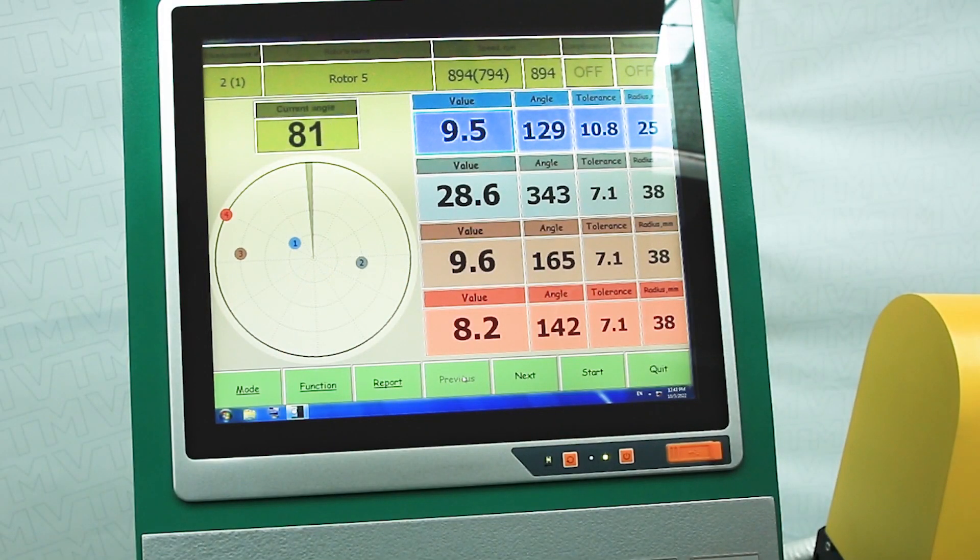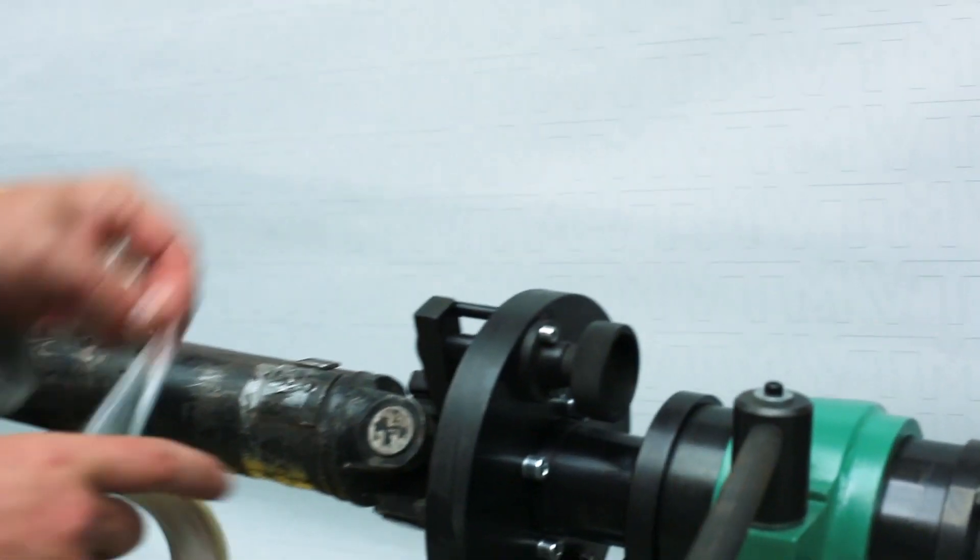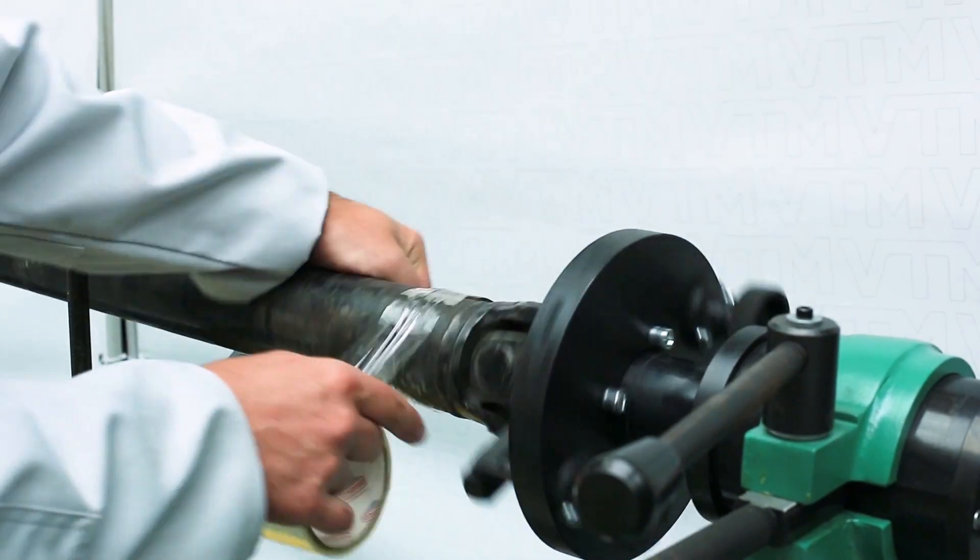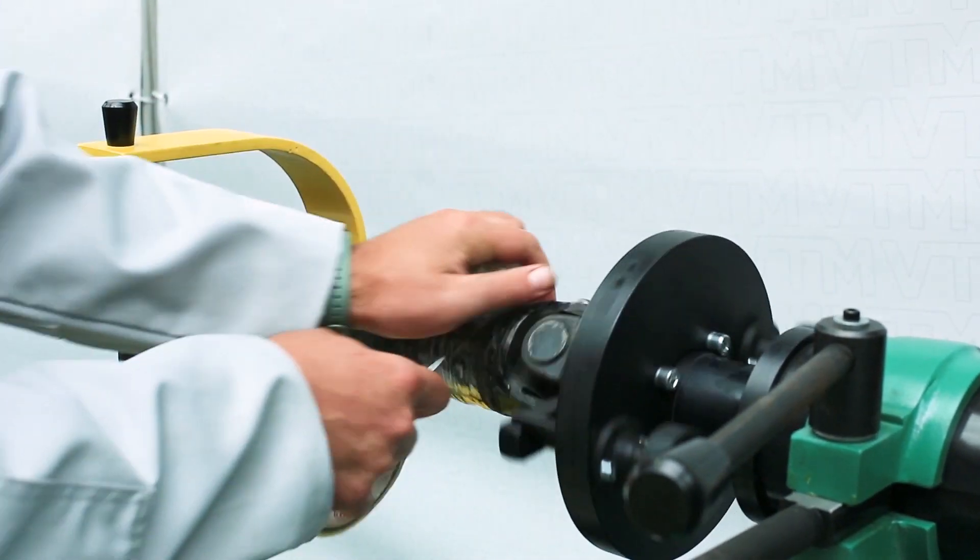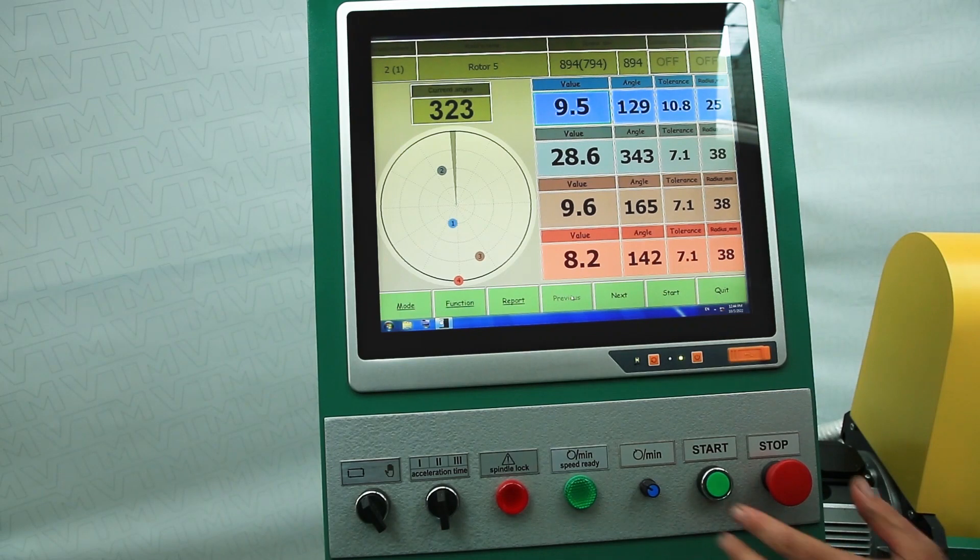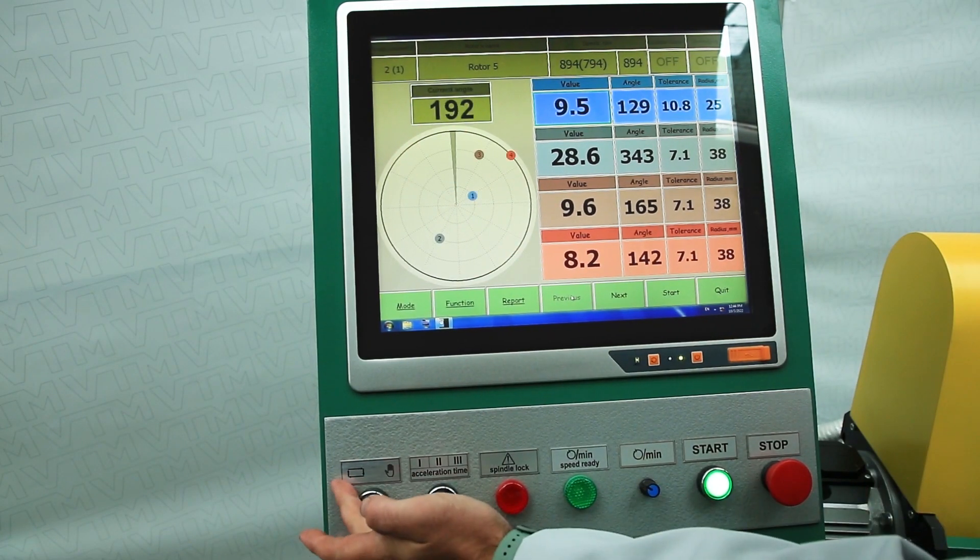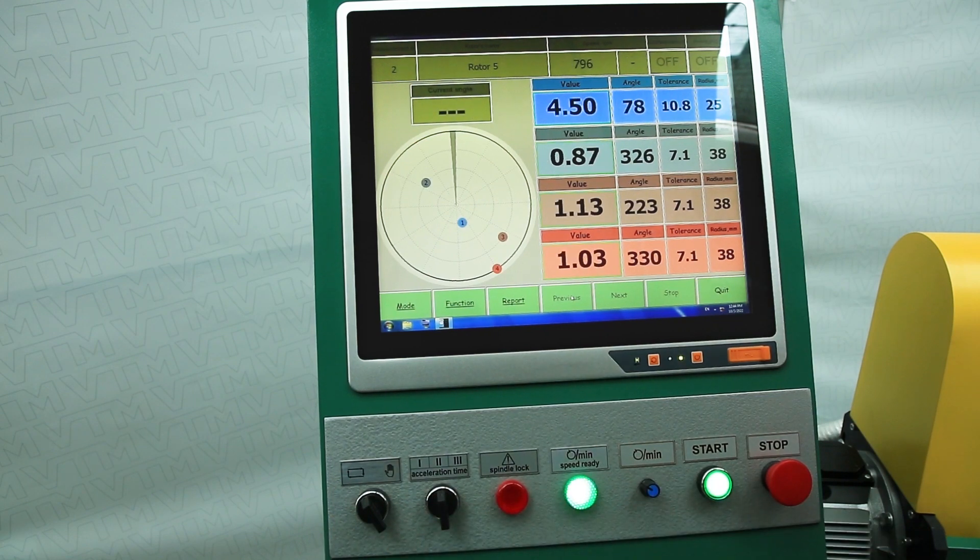Next, we turn the fourth plane under the correction zone and set the weight. The machine is in automatic mode, so now it will start measuring, record the measurement results and stop the rotation.